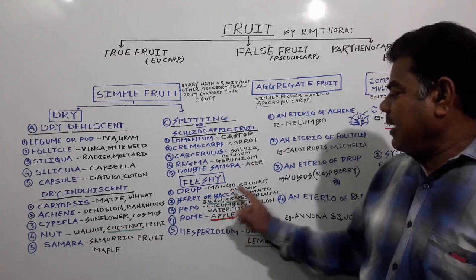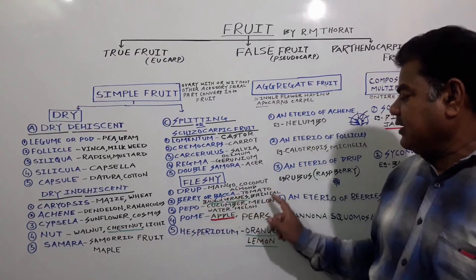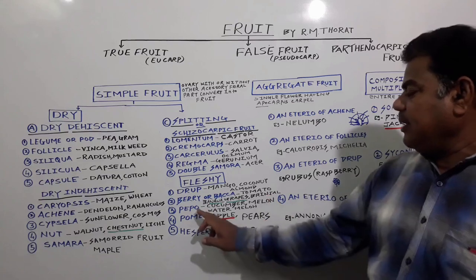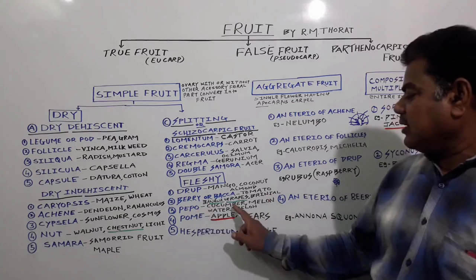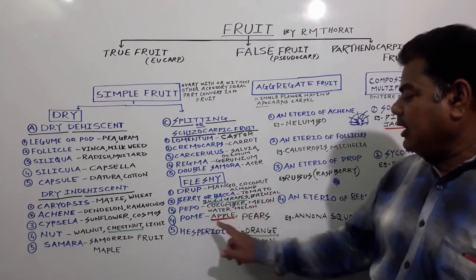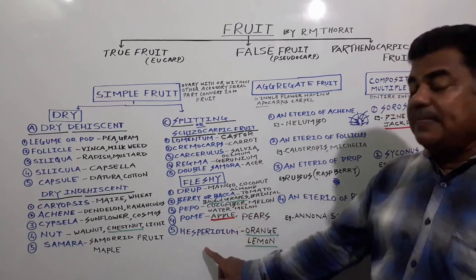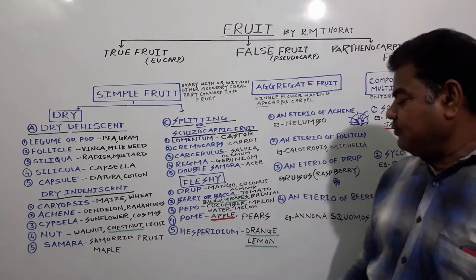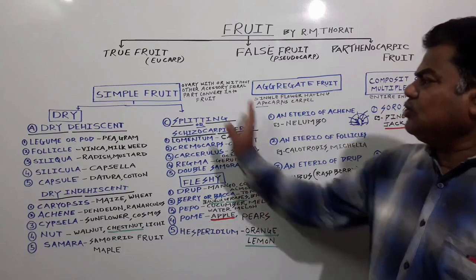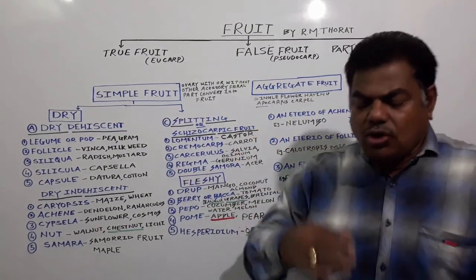Fleshy fruits include drupe in mango, coconut, almond; berry or bacca in tomato, banana, grapes, brinjal; pepo fruits in cucumber, melon, watermelon; pome fruits in apple and pear; and hesperidium fruits in orange and lemon.